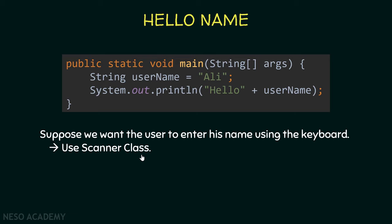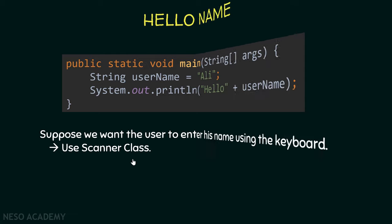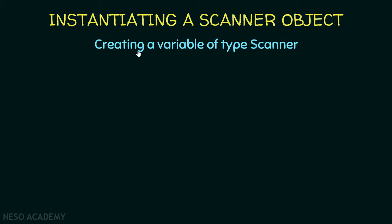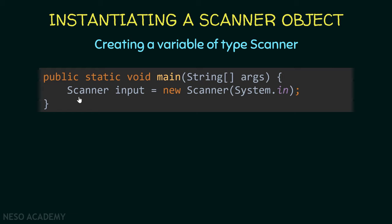The Scanner class allows us to read input from the keyboard. For example, we can tell the user to enter his name and then store the name inside a variable or print it. To use the Scanner class we have to instantiate a Scanner object, so we create a variable of type Scanner. We use the name of the class which is Scanner, call the variable for example 'input' — this can be anything — and assign it to a new Scanner.